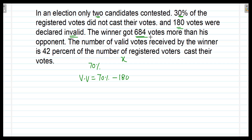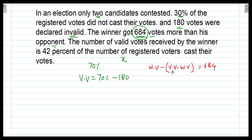It is said that the winner got 684 votes more than his opponent. We will get the equation to find the value of x. We apply this to get the equation. We can write: winner's votes minus (valid votes minus winner's votes) equals 684. Whatever votes the winner got, subtract the loser's votes. The loser's votes equal valid votes minus winner's votes, and that equals 684.